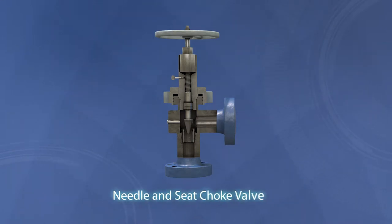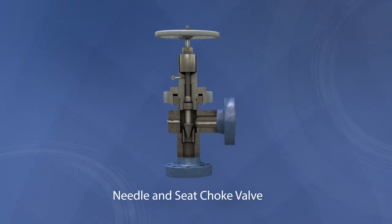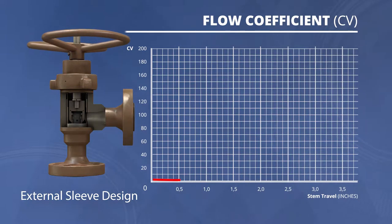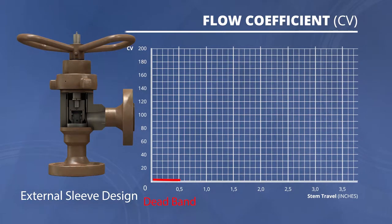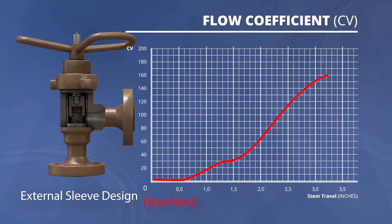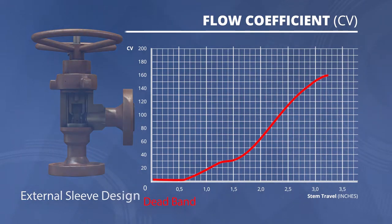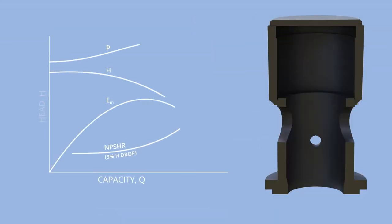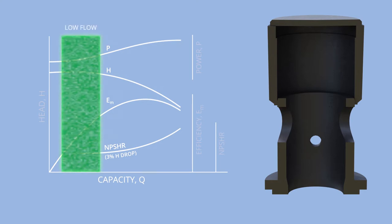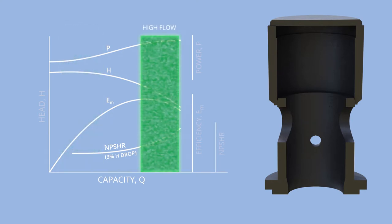When the seating area is close to the throttling area, erosion issues may occur, as frequently happens with the needle and seat valve. MasterFLOW solved this issue by incorporating a dead band area in the design of the external sleeve and cage choke valve. The dead band ensures that the throttling area is far from the seat, resulting in an area of zero flow. MasterFLOW's custom trims can be designed for a specific pump curve, providing high loss coefficients at low flows and low loss coefficients at high flows.